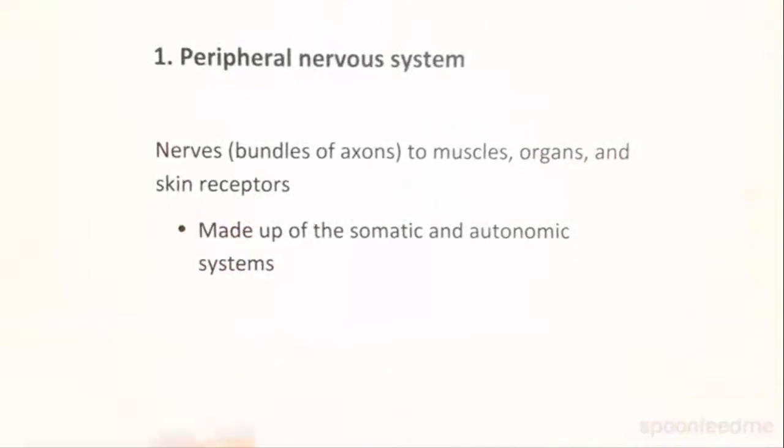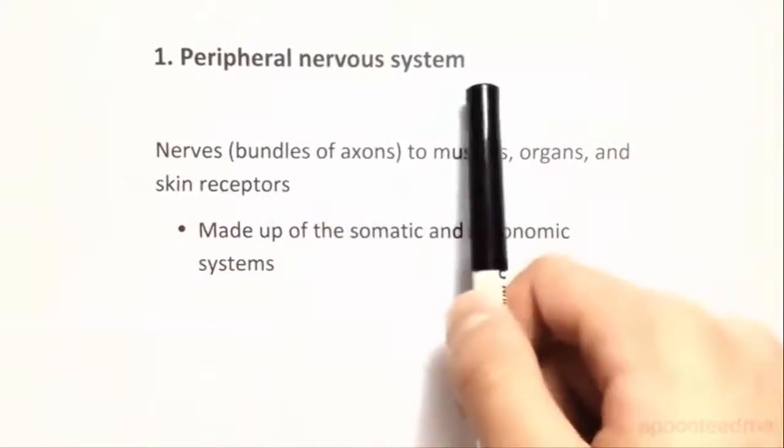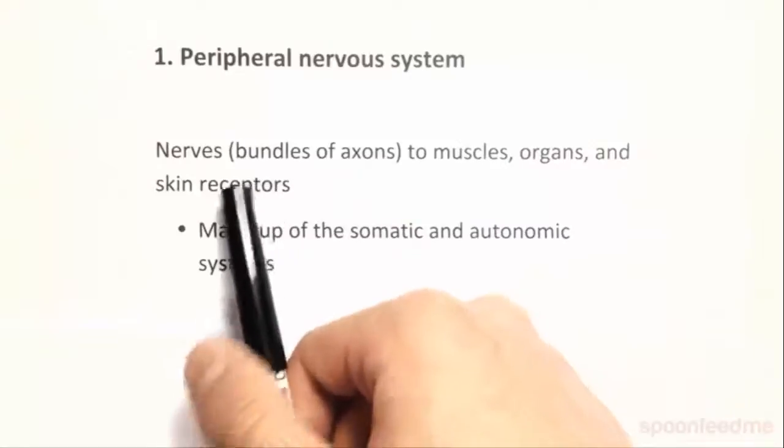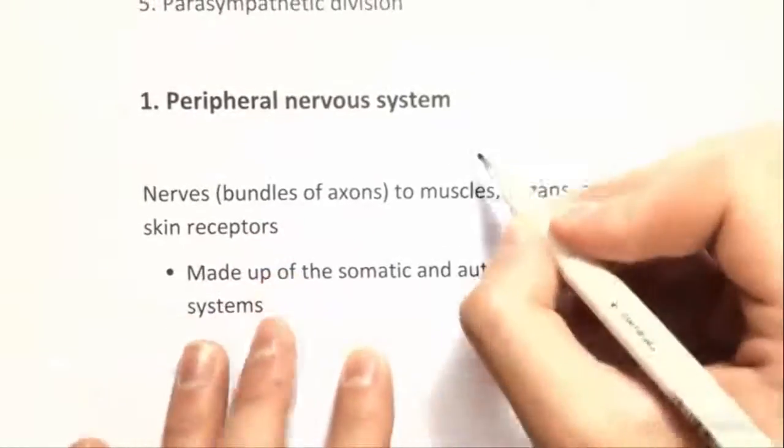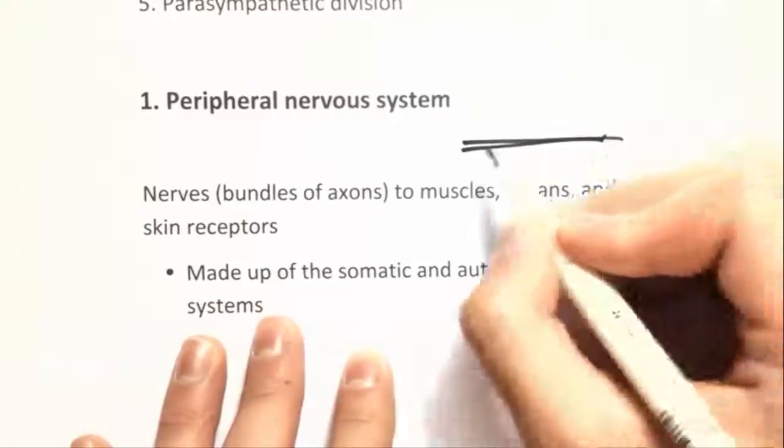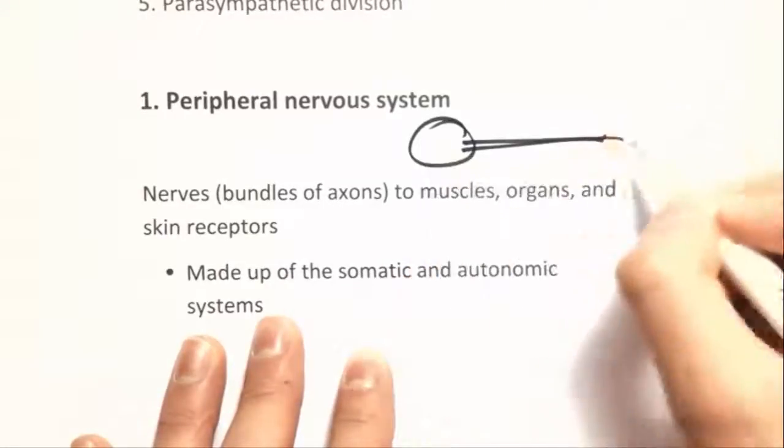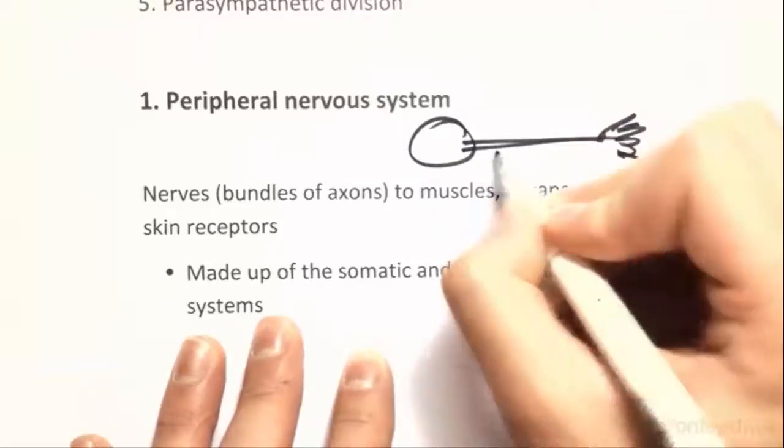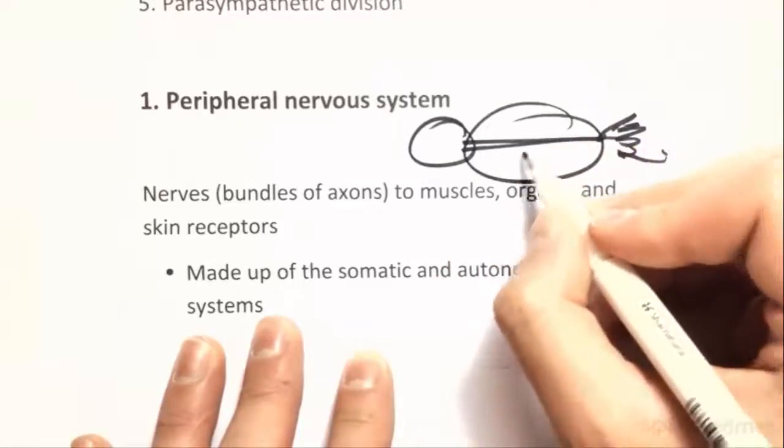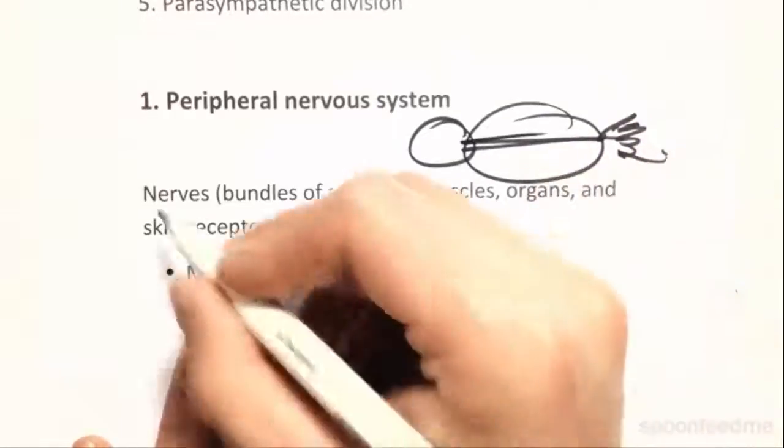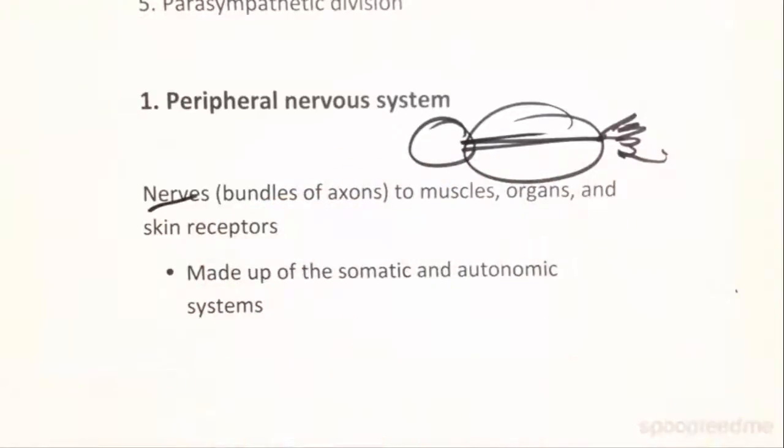Exactly like I said, the peripheral nervous system is made up of nerves. Nerves are just bundles of axons, which is the cable part of the neuron. So you've got the head and the little tail-y bits, but this is the axon, and bundles of these make up nerves. They go to muscles, organs, skin receptors.